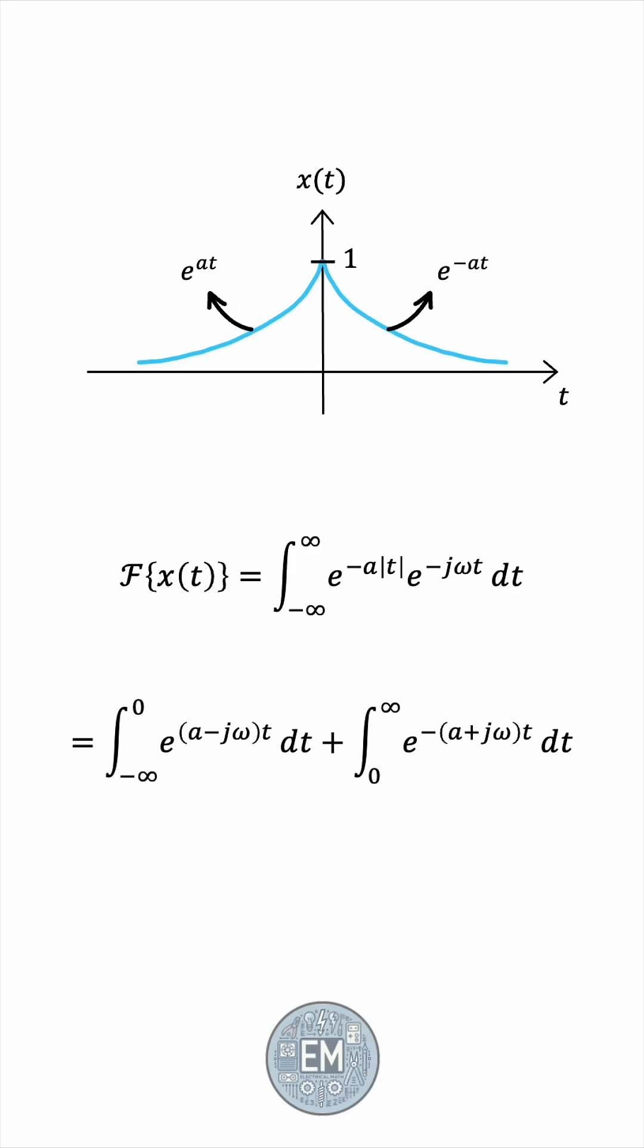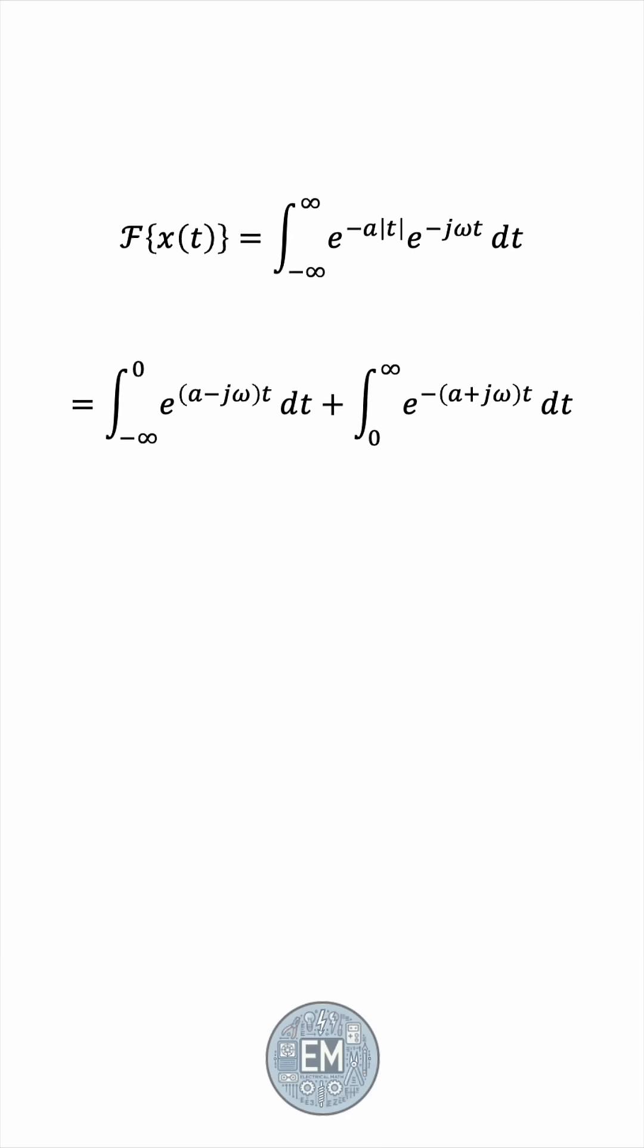So the Fourier transform of x of t, which we can denote using this fancy f operator, or by capital X of j omega. And this capital notation is not unique to the Fourier transform. We use it in the Laplace transform, the phasor transform, any frequency domain representation.